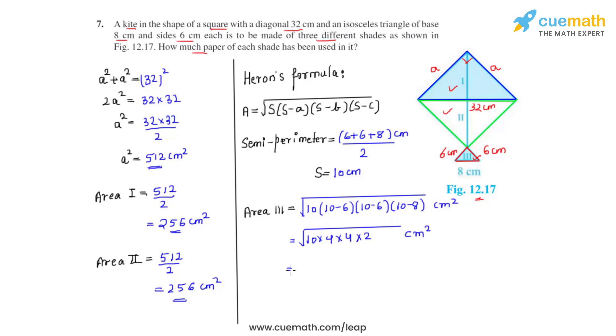So if we substitute the value of √5, we write it as 8 times 2.24 centimeter square. That gives us the area of region 3 to be equal to 17.92 centimeter square.